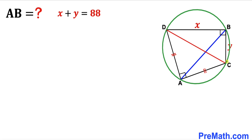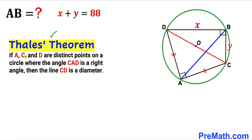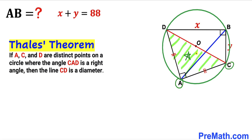In the next step, I have connected vertices C and D. Let's recall Thales' theorem: if A, C, and D are three distinct points on a circle where angle CAD is 90 degrees, then line CD is a diameter. Since we have three distinct points A, C, D on the same circle and a 90-degree angle at A, line CD is our diameter, passing through center O.